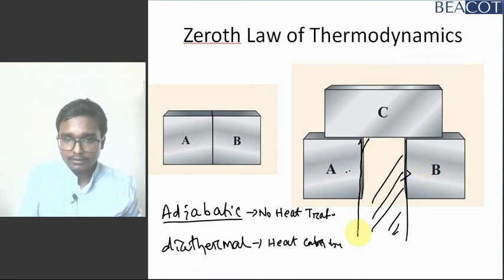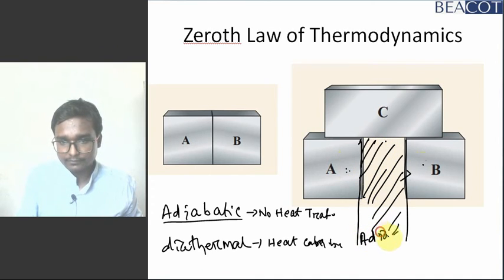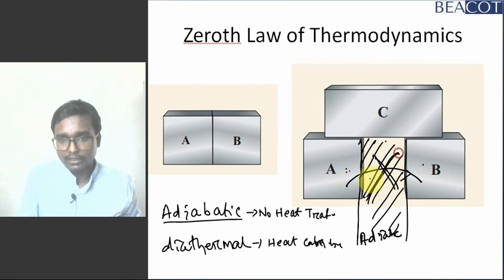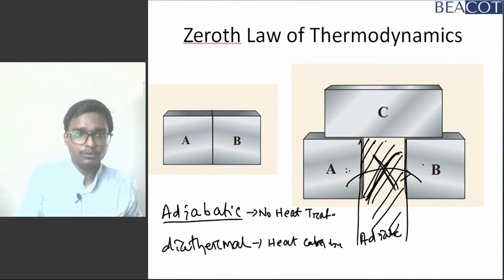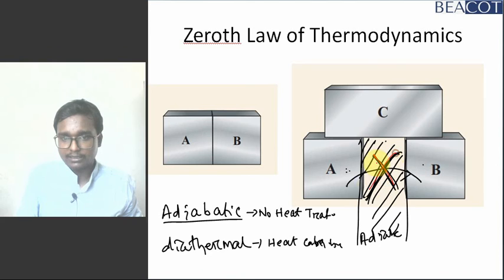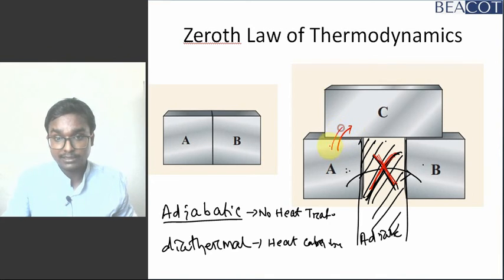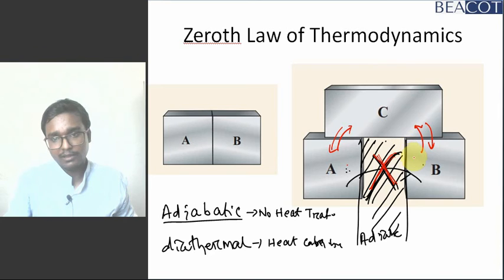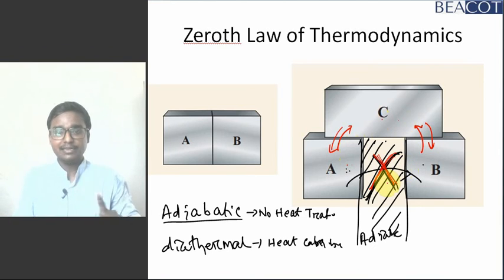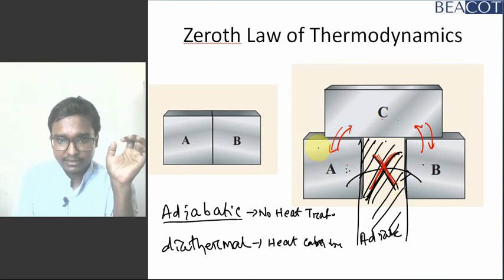Between A and B I am putting one adiabatic wall, so between A and B no heat transfer is happening. But between A and C, heat transfer is there — heat can be transferred from A to C or C to A. Likewise, between B and C, heat can transfer from B to C or C to B. So between A and C and B and C heat transfer is happening, but between A and B no heat transfer is happening.